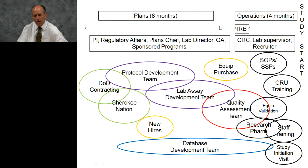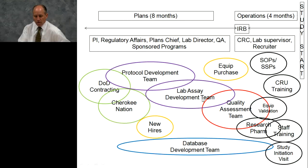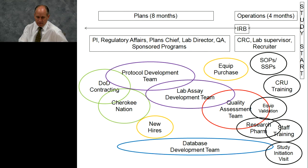The benefit of this framework is that it works not just for a single study, but if you have multiple studies going on simultaneously — some in the plans phase, some in the operations period, some already actively enrolling or immunizing volunteers — they can layer and ensure you still have enough capacity to cover all your commitments. When you look at the plans portion, the PI is obviously involved, as is our regulatory affairs group. We've dedicated assets to developing a plans chief, someone whose job is to coordinate the entire eight-month period. Your lab director and QA program have to be involved, along with sponsored programs.